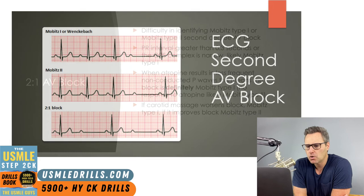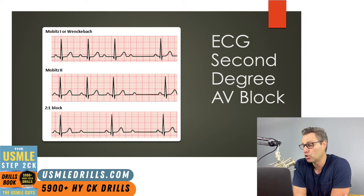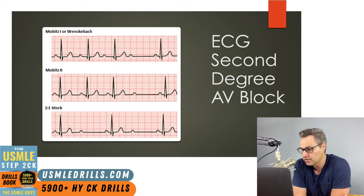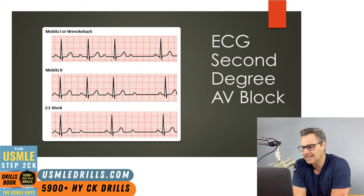Looking at ECG examples: in Mobitz Type 1, the PR interval progressively gets longer until a non-conducted P wave occurs, followed by a shorter PR interval, then the process repeats. In Mobitz Type 2, PR intervals remain constant before a P wave simply fails to conduct. In a 2:1 block, this distinction is difficult — maneuvers like carotid massage or atropine help differentiate, since carotid massage worsens Type 1 or improves Type 2.